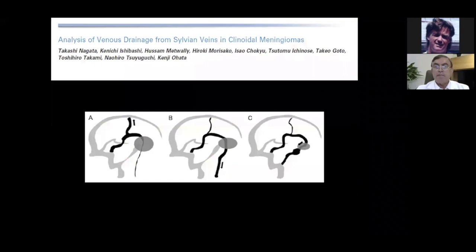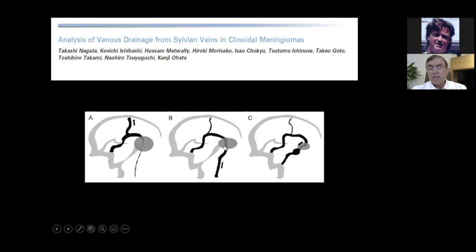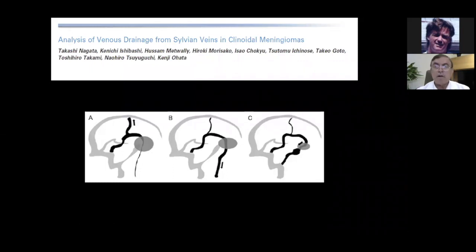A beautiful paper from Japan shows a very detailed venous relationship. If a meningioma is here and the superficial middle cerebral vein is coming to go into the sphenoparietal sinus, the meningioma may close the sphenoparietal sinus, so drainage goes up towards the circular sinus or down through the base of the temporal lobe into the cavernous sinus. These venous drainage variations must be studied on a venogram before embarking on surgery at the anterior clinoid.